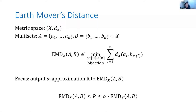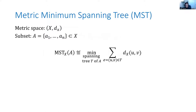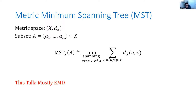We'll also look at the geometric Minimum Spanning Tree problem, where we have a metric space and one subset A of endpoints. Our goal is to approximate the cost of a minimum spanning tree of A, where the vertices of T are points in A and the cost of an edge is the distance between those two points. In this talk, though, we're mostly focusing on EarthMover Distance, because the techniques for improved EMD bounds will be very similar to those for improved MST bounds.